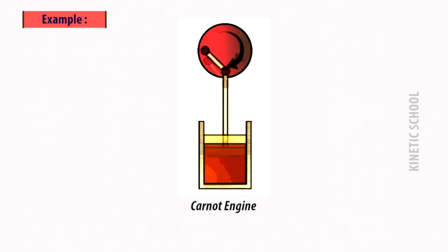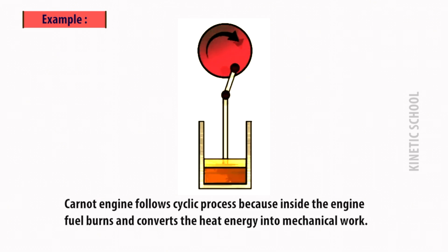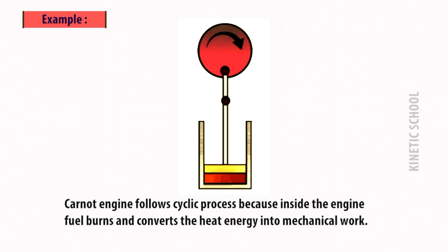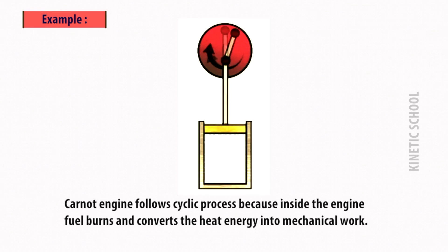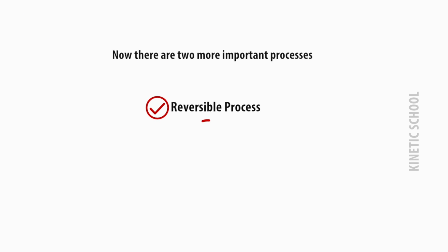The Carnot cycle is the best example of a cyclic process, because inside the Carnot engine fuel burns and converts heat energy into mechanical work. There are two more important processes: reversible process and irreversible process.